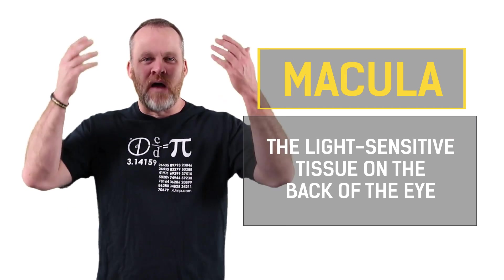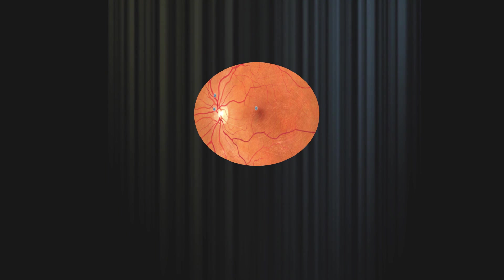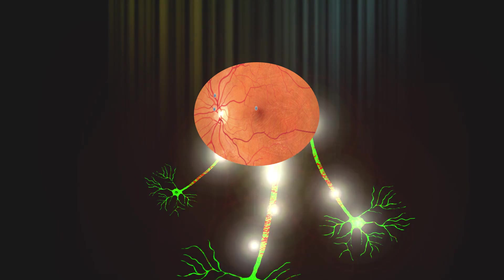The next term is the macula of the retina. This is the light sensitive tissue on the back of the eye. So as we read, light is focused on our macula and millions of cells change that light into nerve signals that tell our brain what we're seeing.